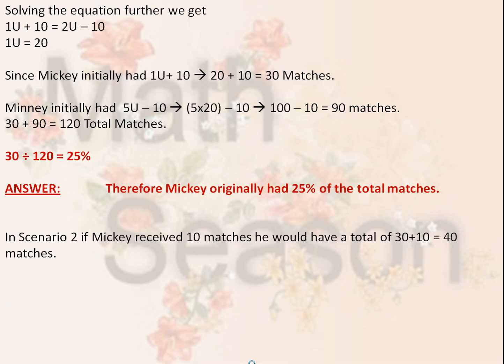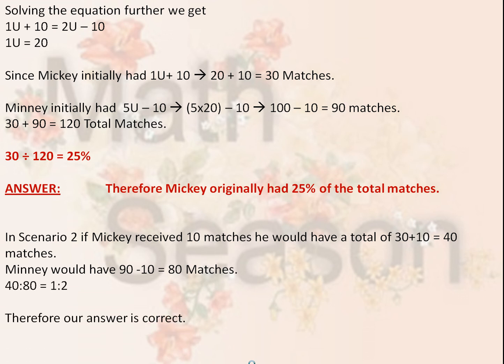In Scenario 2, if Mickey received 10 matches, he would have 30 plus 10, or 40 matches. Minnie would have 90 minus 10, or 80 matches. 40 to 80 is a ratio of 1 to 2, or half — therefore our answer is correct.